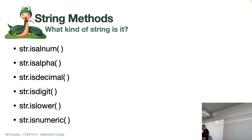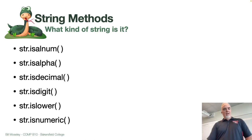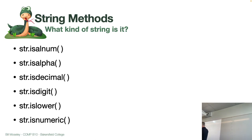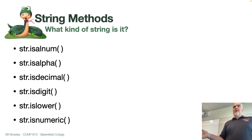If a string is numeric — let's forget decimal for now, that's a confusing one because you'd think it means any number with a decimal point, but it's not. It's almost identical to numeric, just a little more narrow. Numeric includes Roman numerals, interestingly enough. So if we wanted to take a string variable and check if it's okay to add it to an integer without getting an error, we might check first using isnumeric or isdecimal. That's a return-type method.